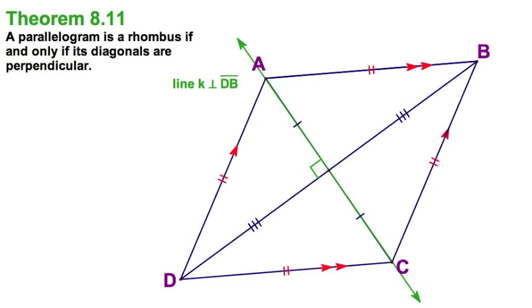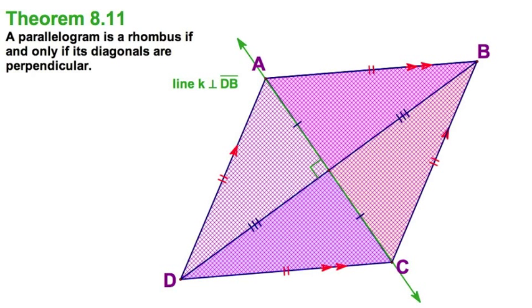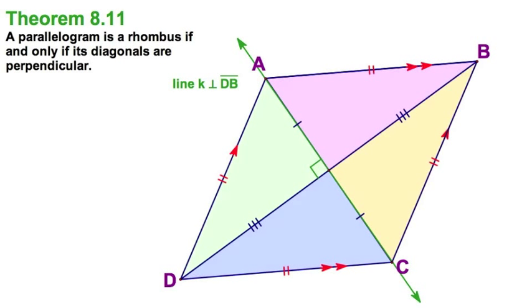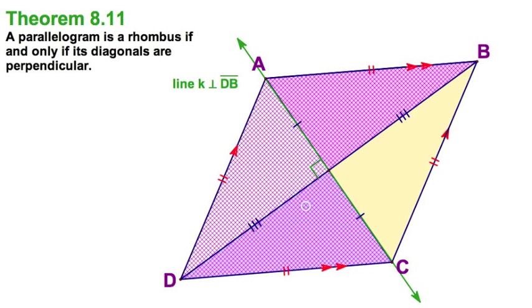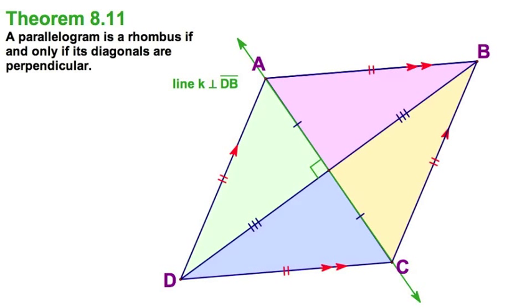Now, it's an if and only if, biconditional. So, if I wanted to prove this, I would go back to my four triangles in either direction. Let's suppose I started by saying that diagonals are perpendicular. Then these four triangles are congruent by side-angle-side, and corresponding parts of congruent triangles gives me four congruent sides.